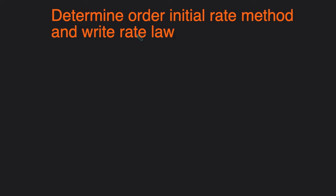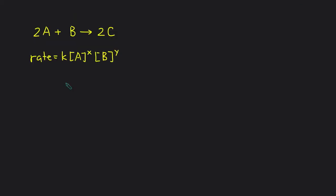Let's start with the definition of the rate law. Let's say we had this sample reaction 2A plus B forms 2C. The rate law is going to be: rate equals the rate constant K times the concentration of the reactants, which in this case is A and B. These brackets mean concentration, raised to the order. So X is the order of A and Y is the order of B.